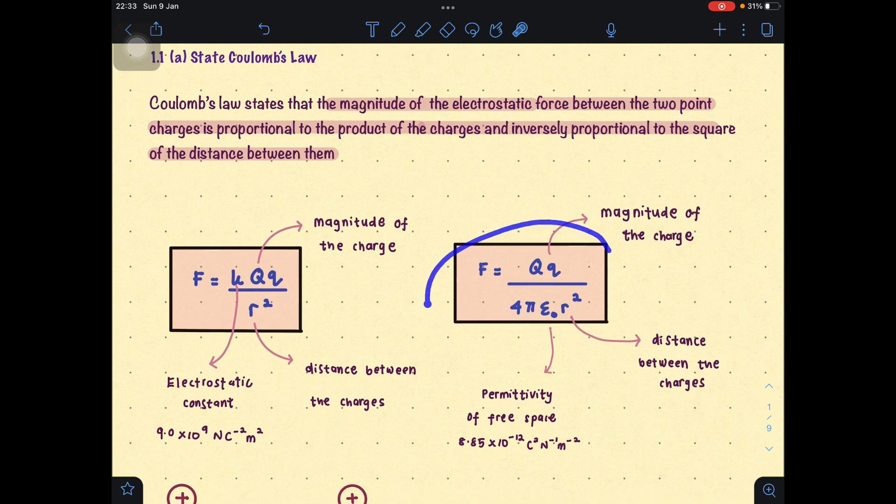Or we can also use this formula. Basically, it's the same thing, where we use in terms of permittivity of free space, this ε₀. This is also a constant value at 8.85×10⁻¹² . So, benda yang sama, Q times Q, magnitude of the charge, divided by 4πε₀R².